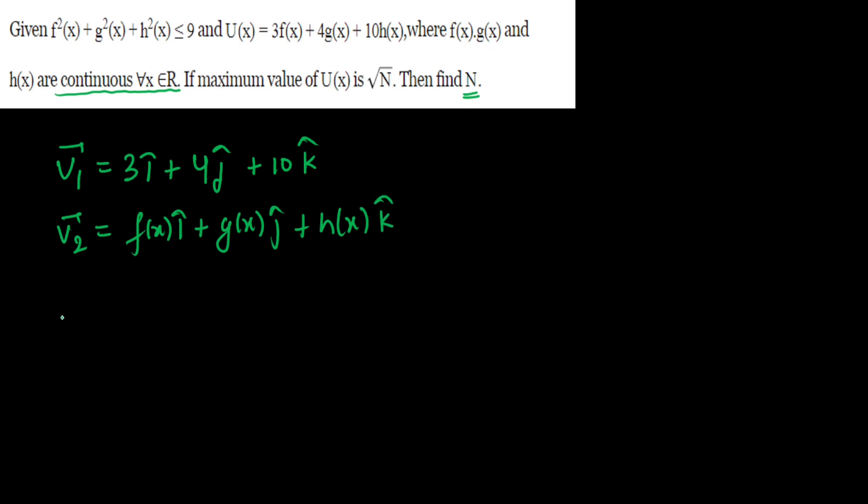Now if you take the dot product v₁·v₂, the reason I have taken these two is if you take the dot product, this equals 3f(x) + 4g(x) + 10h(x). Next step is v₁·v₂. Now if you check this, 3f(x) + 4g(x) + 10h(x), this is equal to u(x). So I am going to write u(x).